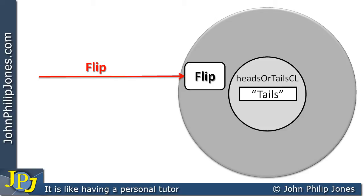What we now need therefore is a mechanism that allows the outside world to gain access to the variable in the center. What would be the point of having an object storing either "tails" or "heads" depending on a method if nobody could see it except the object itself and the methods around that particular center?